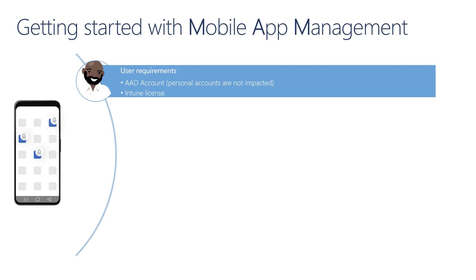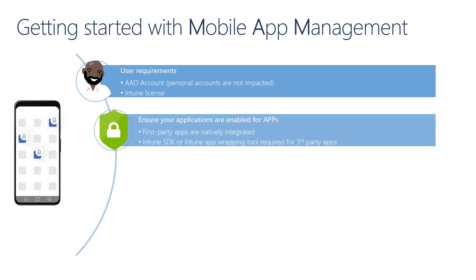Here's how you can get started with mobile application management. Even though devices are not getting enrolled into mobile device management, users still need to have Intune licenses assigned to them in order to leverage application protection policies. Application protection policies do not impact personal accounts on applications that support both corporate and personal accounts. Applications must be enabled to support app protection policies either by leveraging the SDK or the Intune wrapping tool.